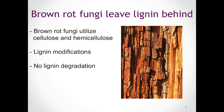Again, Postia placenta is a model brown rot fungus. Characteristically, brown rot fungi will selectively extract cellulose and hemicellulose out of woody biomass, circumventing lignin in the process. So often, as brown rot proceeds, you will see wood that has a brownish discoloration, as you can see in the picture here, which is due to the lignin residues that are left behind as the brown rot process finishes.